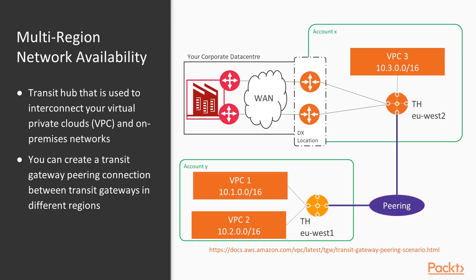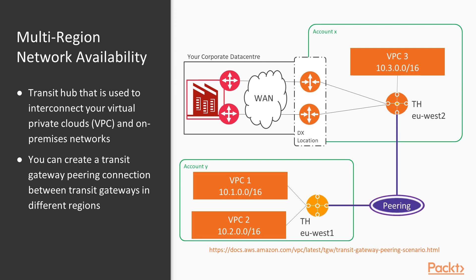Previously, connecting from your corporate data centre meant coming into a particular location. If your corporate data centre connected into Account X talking to VPC3, reaching VPC1 and VPC2 in a different account required peering — which is non-transitive, meaning you couldn't jump through. This resulted in very complicated network designs. Amazon have recently introduced Transit Hubs, which let you connect VPCs together so they can be routed from your corporate data centre as well as from other VPCs and other accounts, giving much broader coverage and easier access from your corporate network.